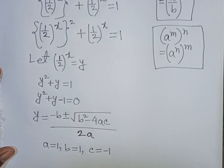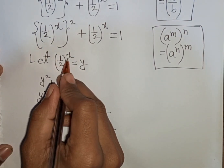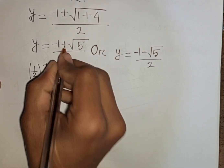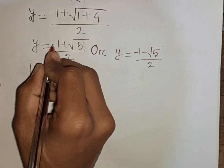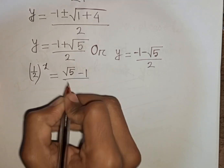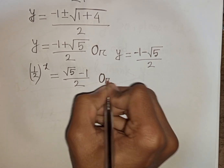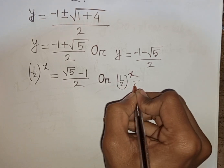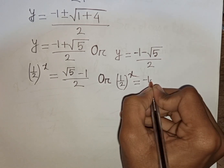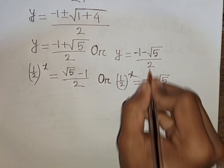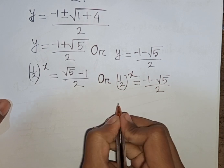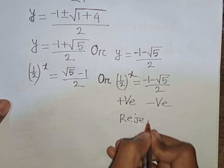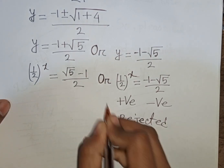Remember that y means (1 over 2) bracket power x. Now, (1 over 2) bracket power x is always positive for any number, but negative 1 minus square root of 5 divided by 2 is negative. So positive cannot equal negative — this case is rejected.